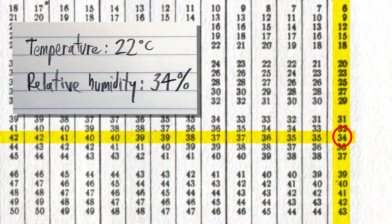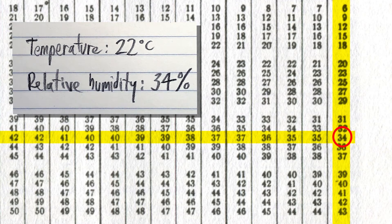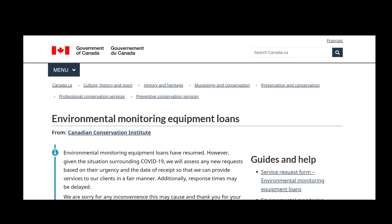You now have a reading of the temperature and relative humidity in the space. For more information about environmental monitoring equipment, please contact us or visit the CCI's website at Canada.ca.